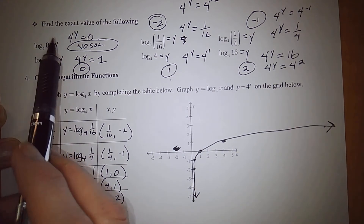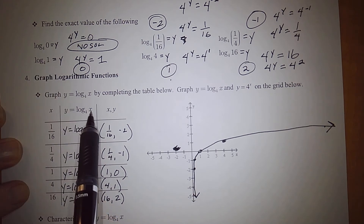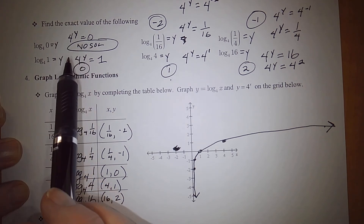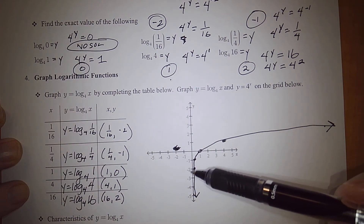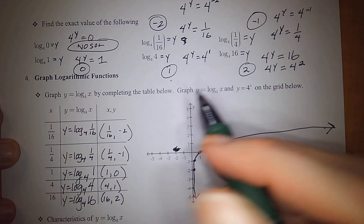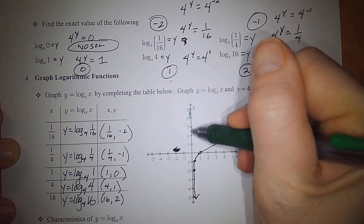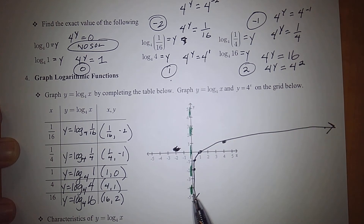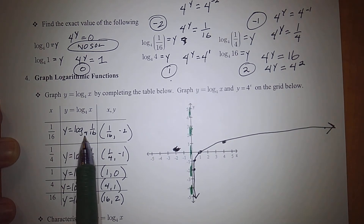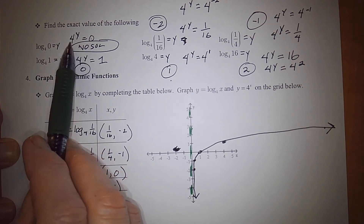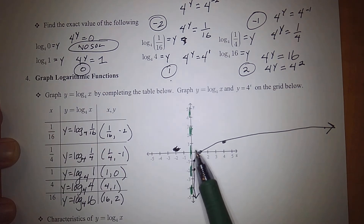The graph has a vertical asymptote. Since x can never equal 0 — because log base anything of 0 has no solution — the graph will never touch the y-axis. That means there is a vertical asymptote at x equals 0, because you can't have a base raised to any exponent equal 0.